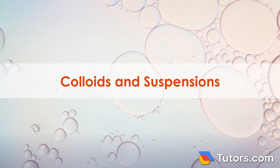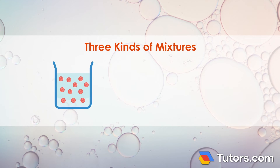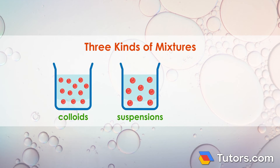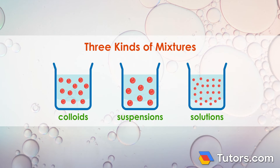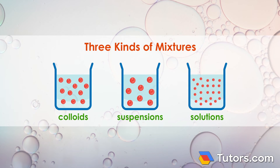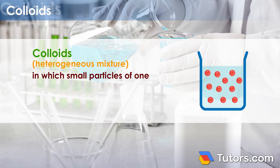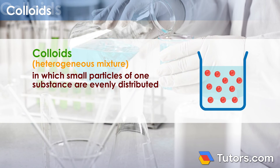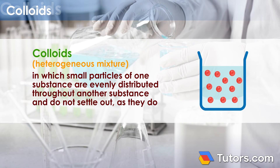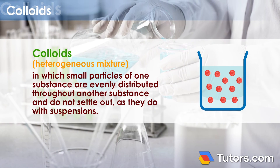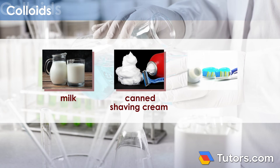Colloids and suspensions: Three kinds of mixtures are easily confused. Colloids are heterogeneous mixtures in which small particles of one substance are evenly distributed throughout another substance and do not settle out, as they do with suspensions. Whole milk is a colloid, as is canned shaving cream and toothpaste.